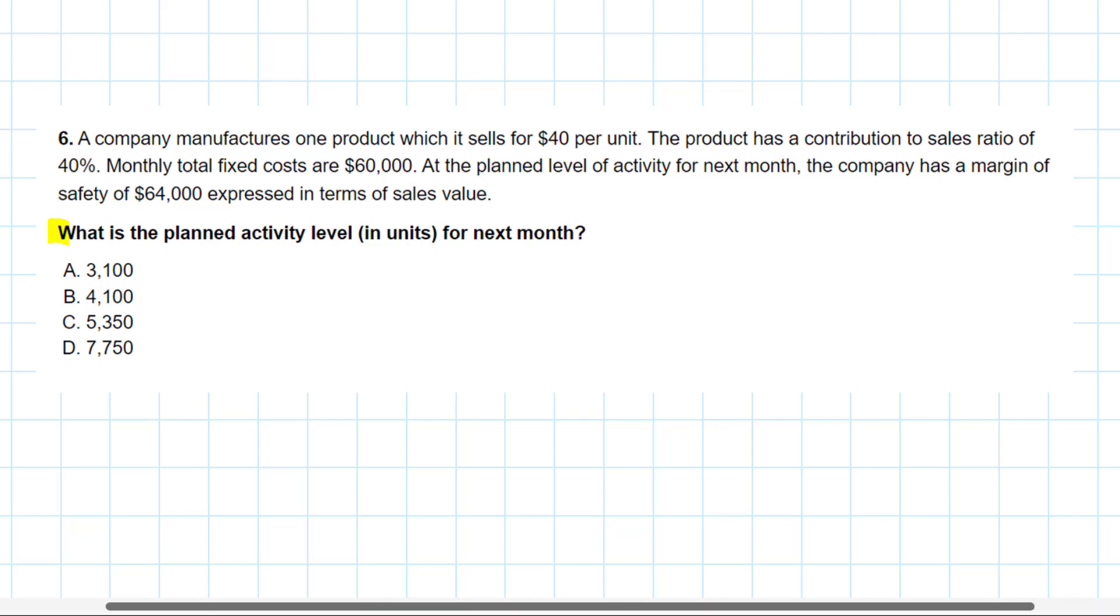First thing I'll do is read the requirement. They're asking for some planned activity. Not sure exactly what I need to do at this point, I need to read further. And we find out that the company manufactures a product that it sells for $40 per unit. And they then tell us the product has a contribution to sales ratio of 40%.